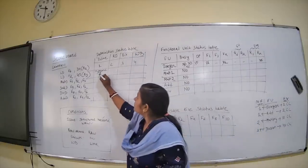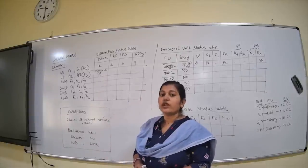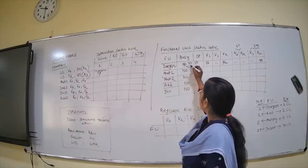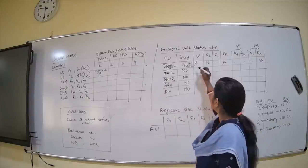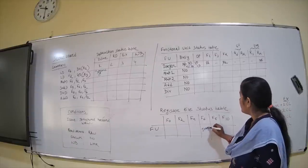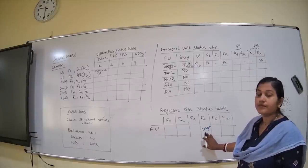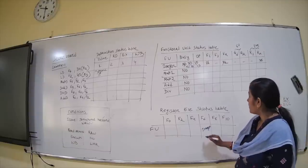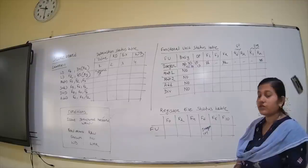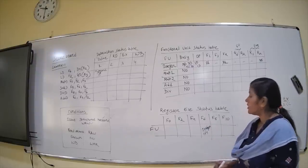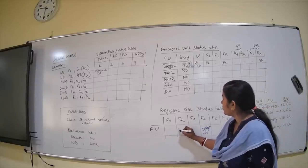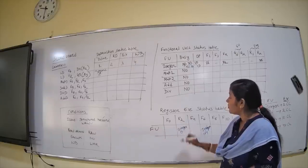At the fifth clock cycle, the second load instruction can enter the issue stage because the integer functional unit is now free. The busy flag goes from no to yes, performing a load operation. The destination register F6 is updated — F6 will be written by integer. In the register file status table, F6 is activated showing it will be written by the integer unit. Then at clock cycle five, the previous F6 entry is struck out, and F2 will now be written by the integer unit.